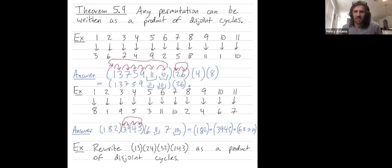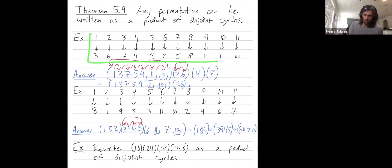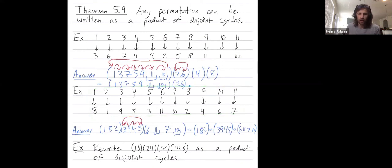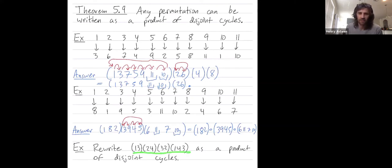Hey folks on YouTube. I want to explain a little bit more about how any permutation can be written as a product of disjoint cycles. So in our last video, we took a permutation and wrote it as a product of disjoint cycles and did the same on another example. Now I want to show you how to do this when you're given a permutation in cycle notation, but it's not yet written as a product of disjoint cycles.